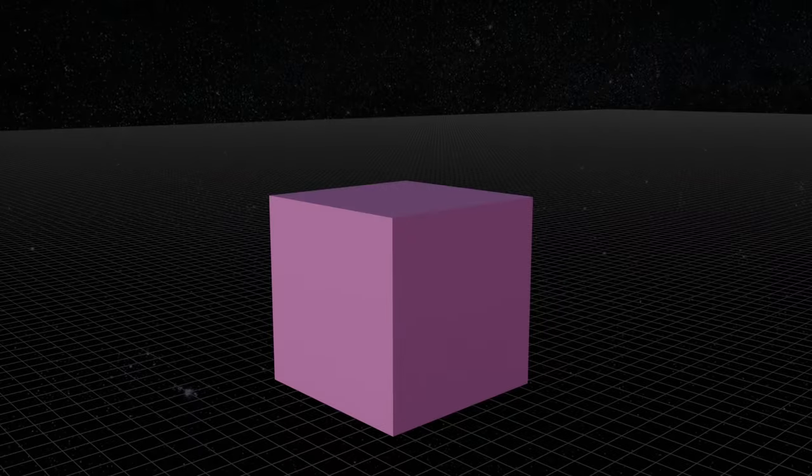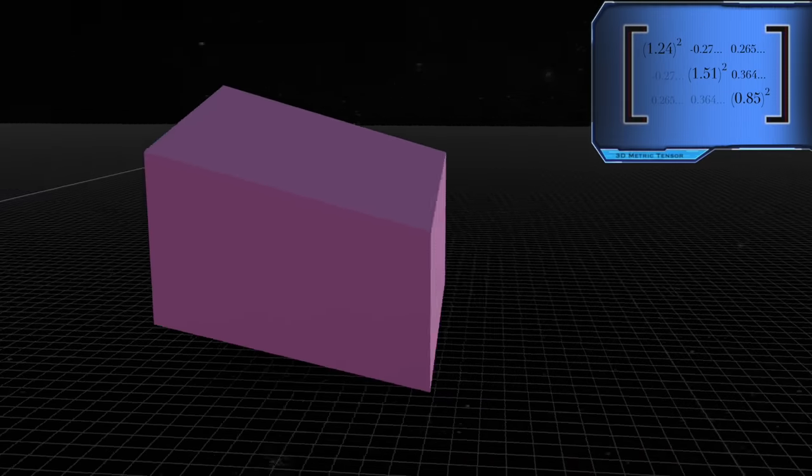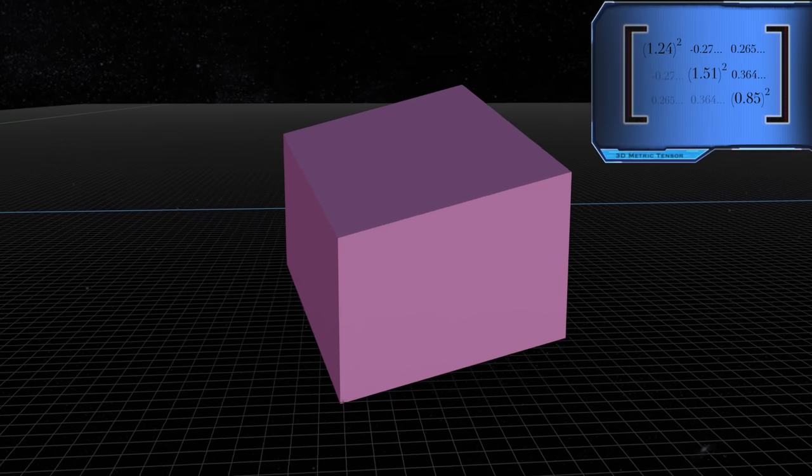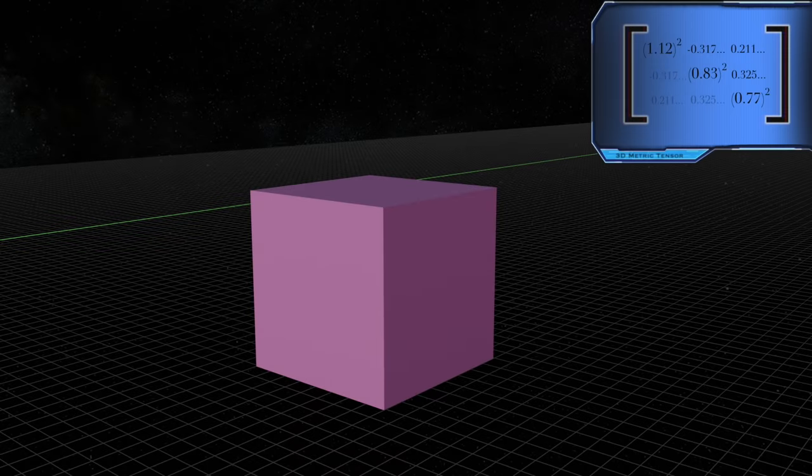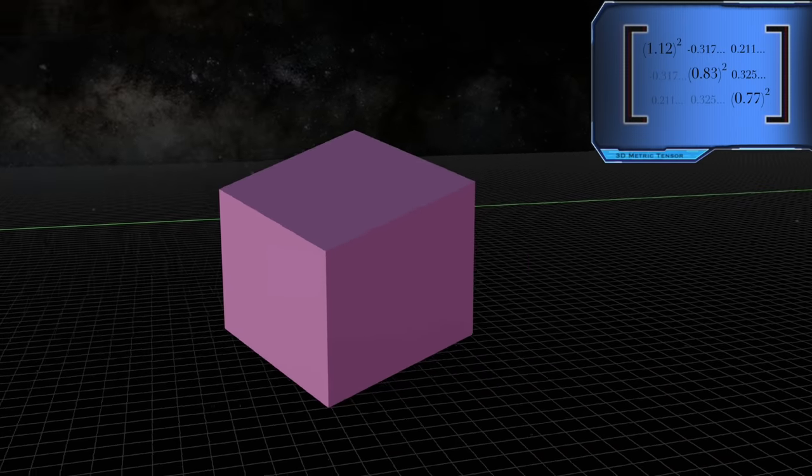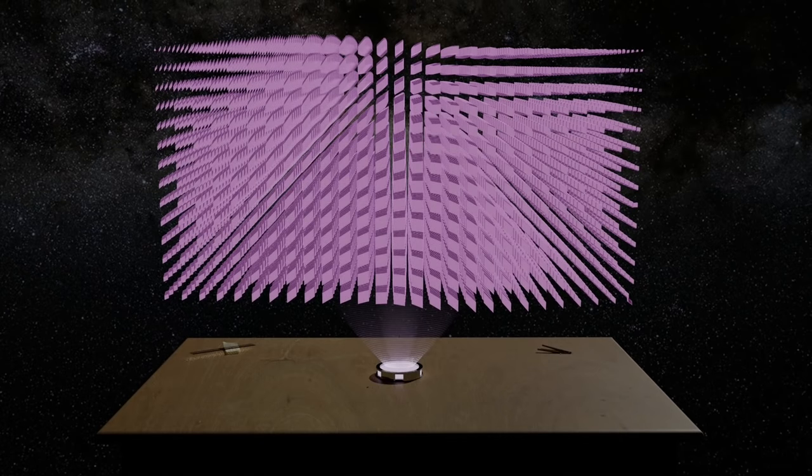Moving to the next point in our three-dimensional map, we read the new metric tensor instructions there to size that piece as well. Repeating this for every point in our 3D map, we arrive at a collection of properly sized pieces for our new manifold.